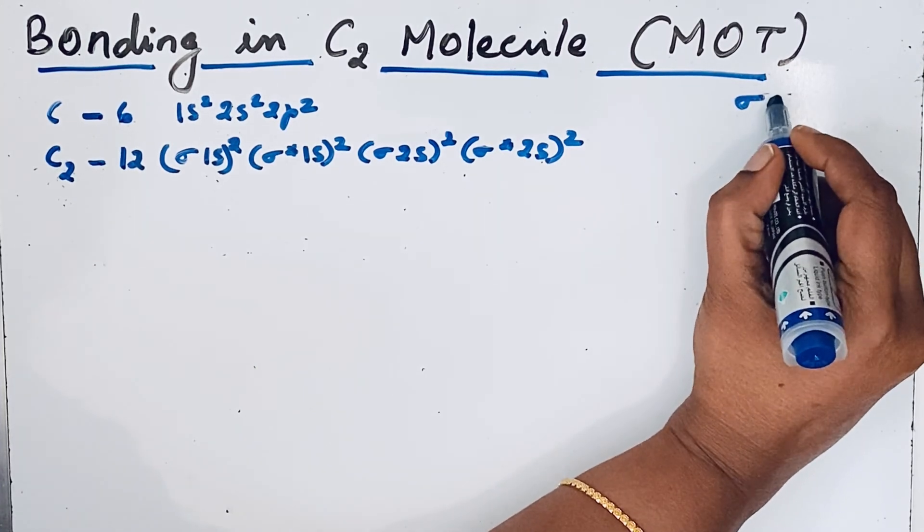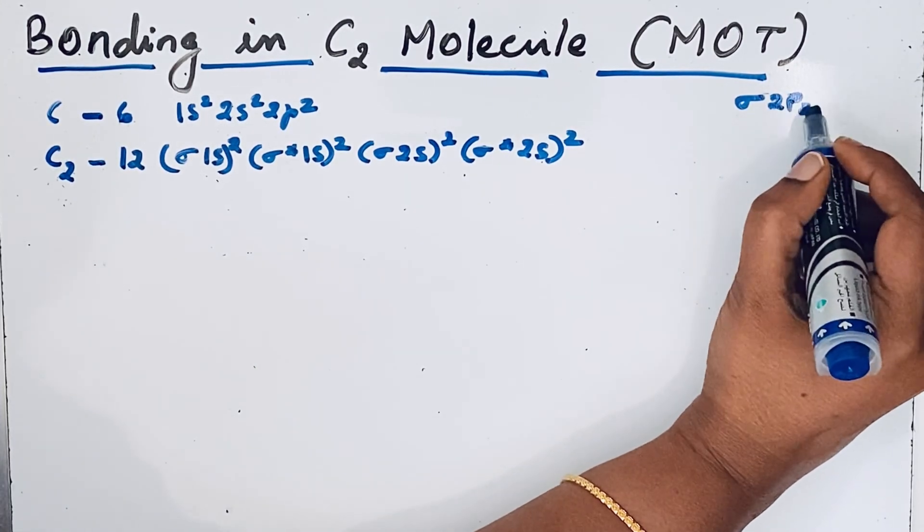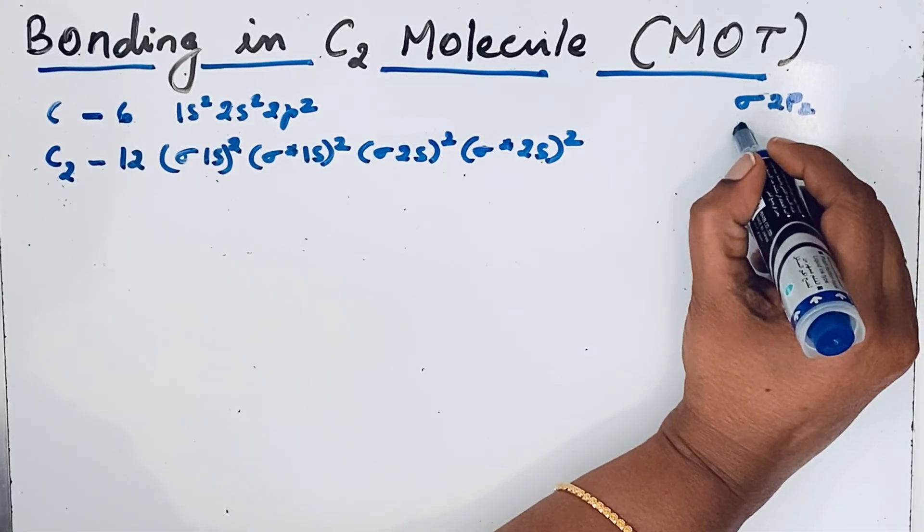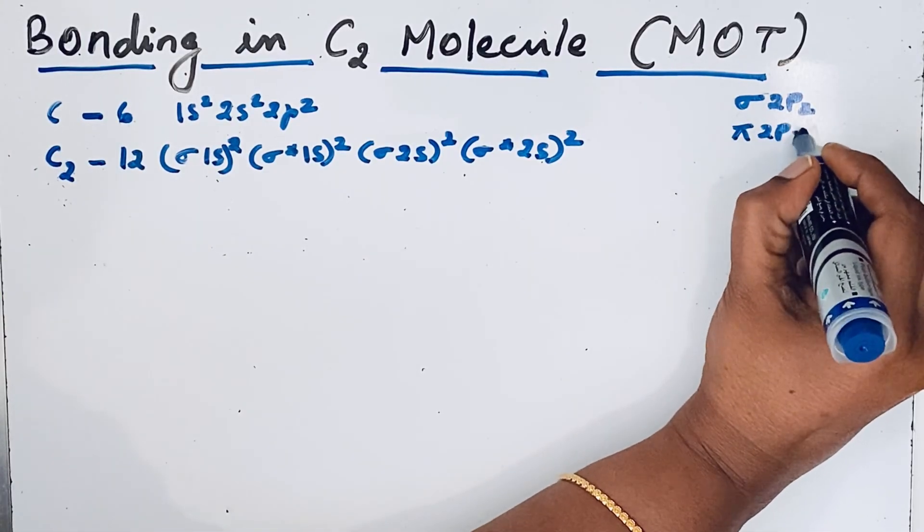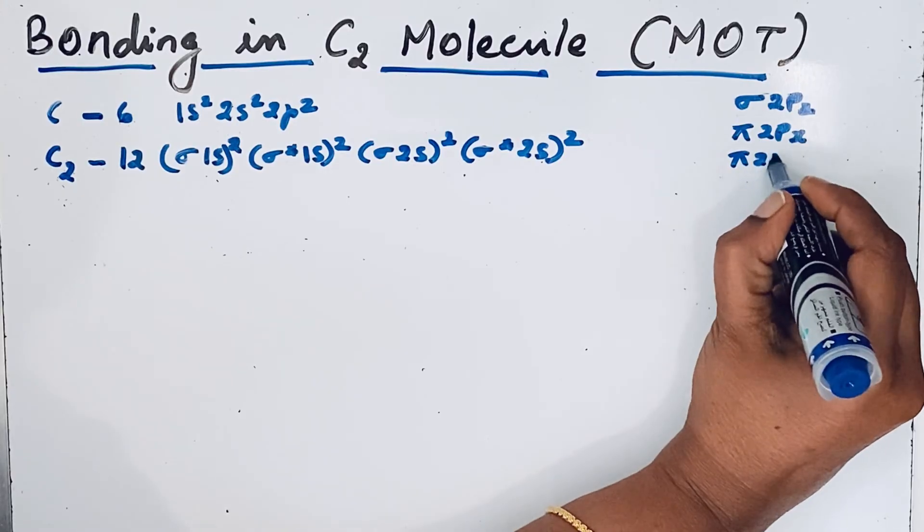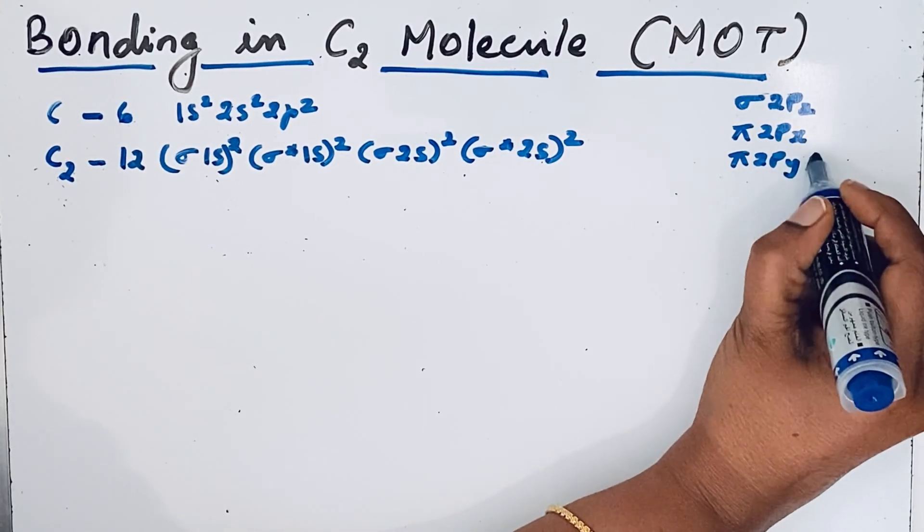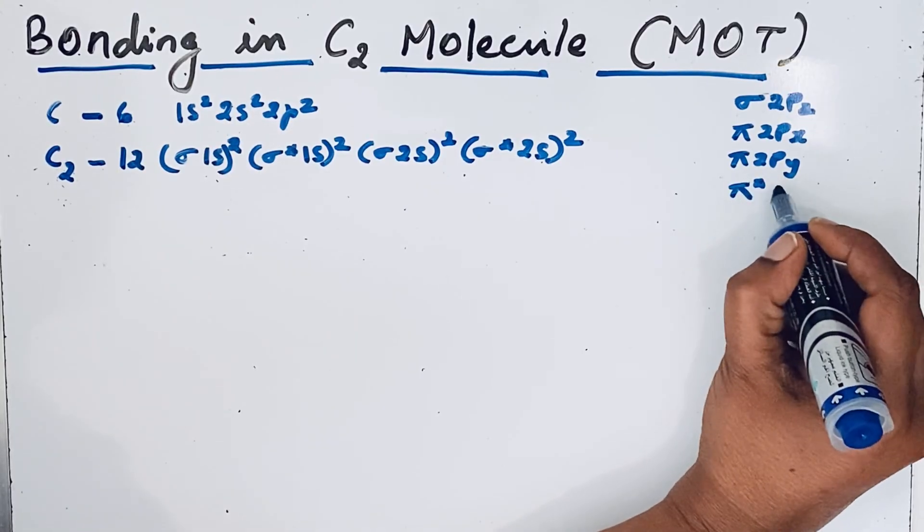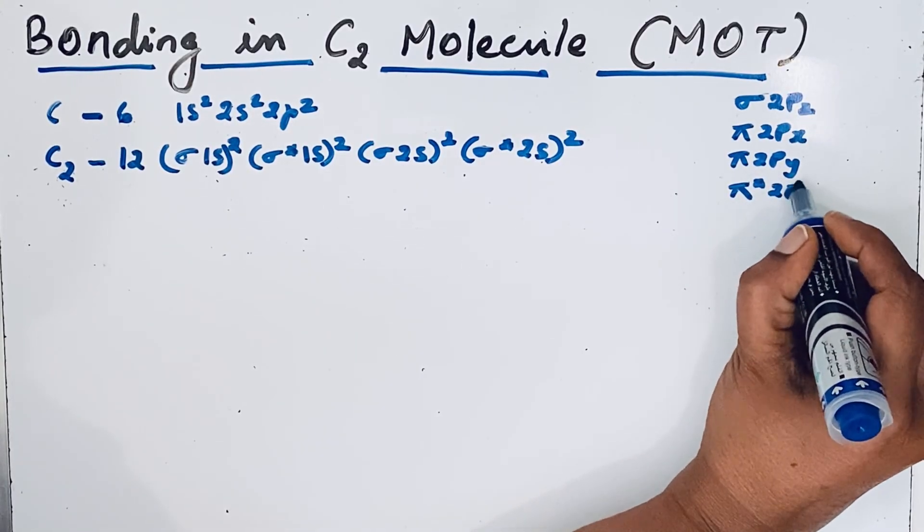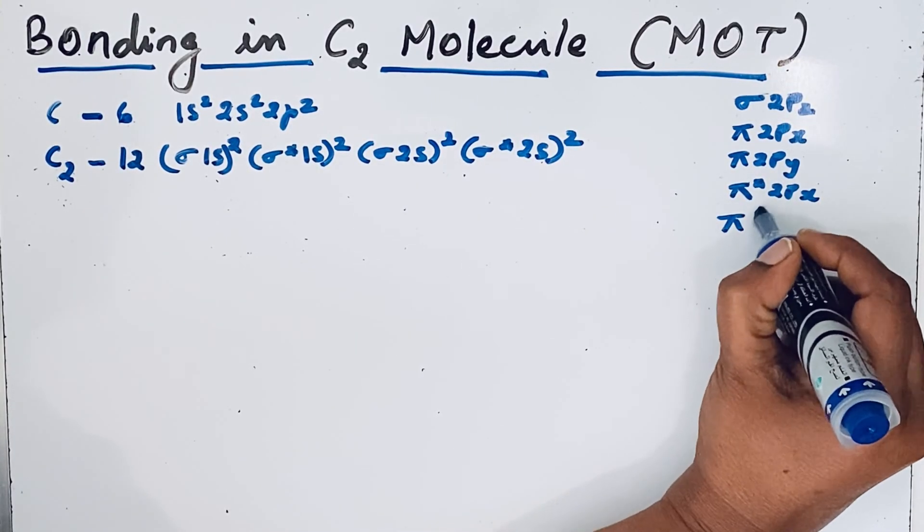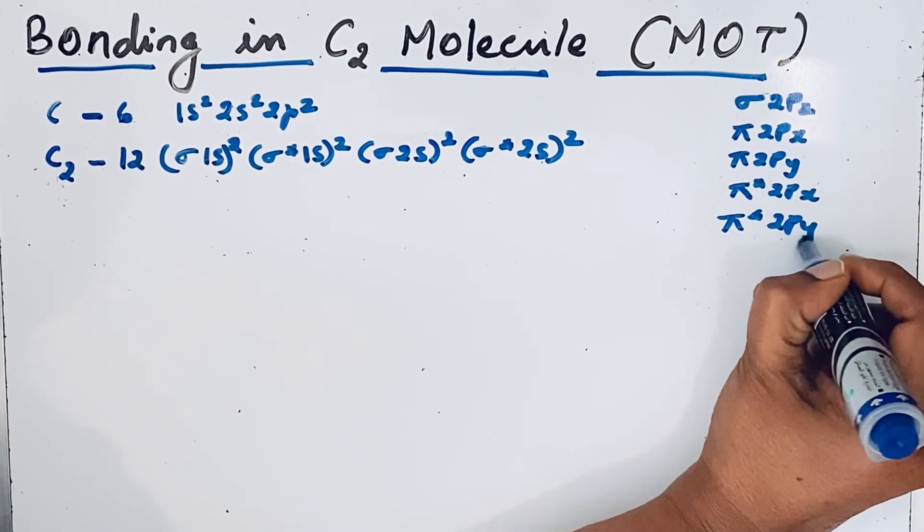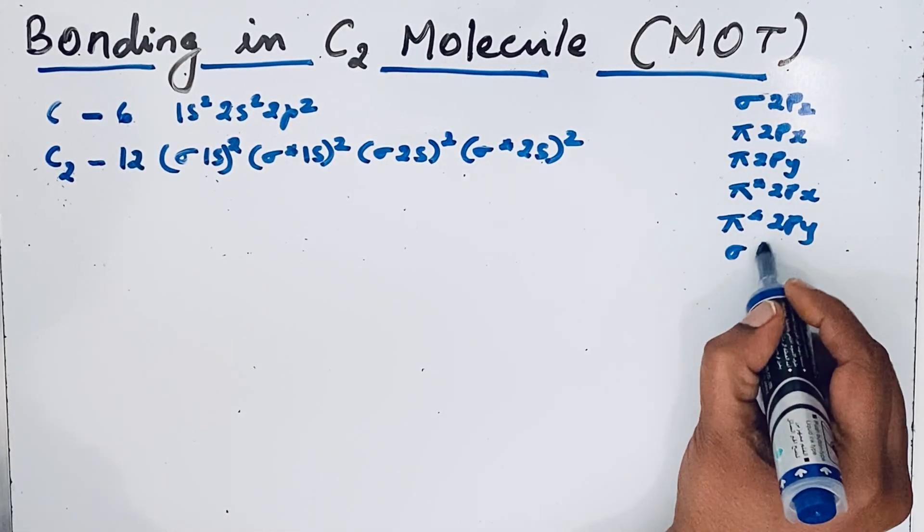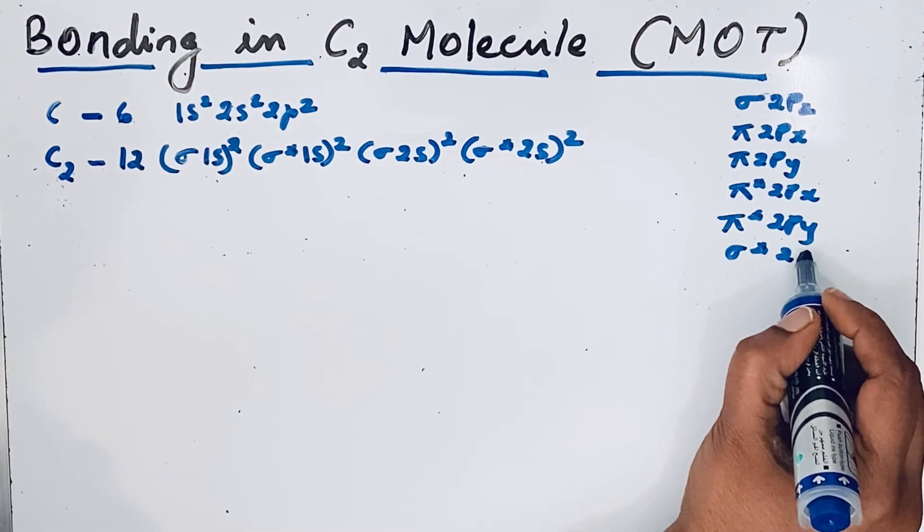σ2pz forms sigma bond, and then π2px, then π2py—these two form pi bonds—then π*2px, π*2py, then after that σ*2pz.